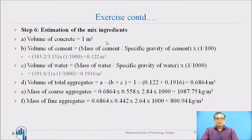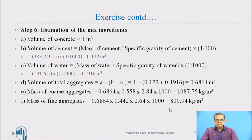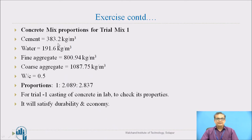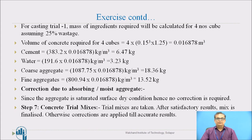Estimation of mix ingredients: for 1 cubic meter of concrete, the volume of cement, volume of water, and volume of aggregates are calculated. Since we know the density, we can find the mass. The mass of fine aggregate is computed. The trial mix proportion obtained is 1 : 2.089 : 2.837. This proportion must be checked by taking a trial mix before being finalized.